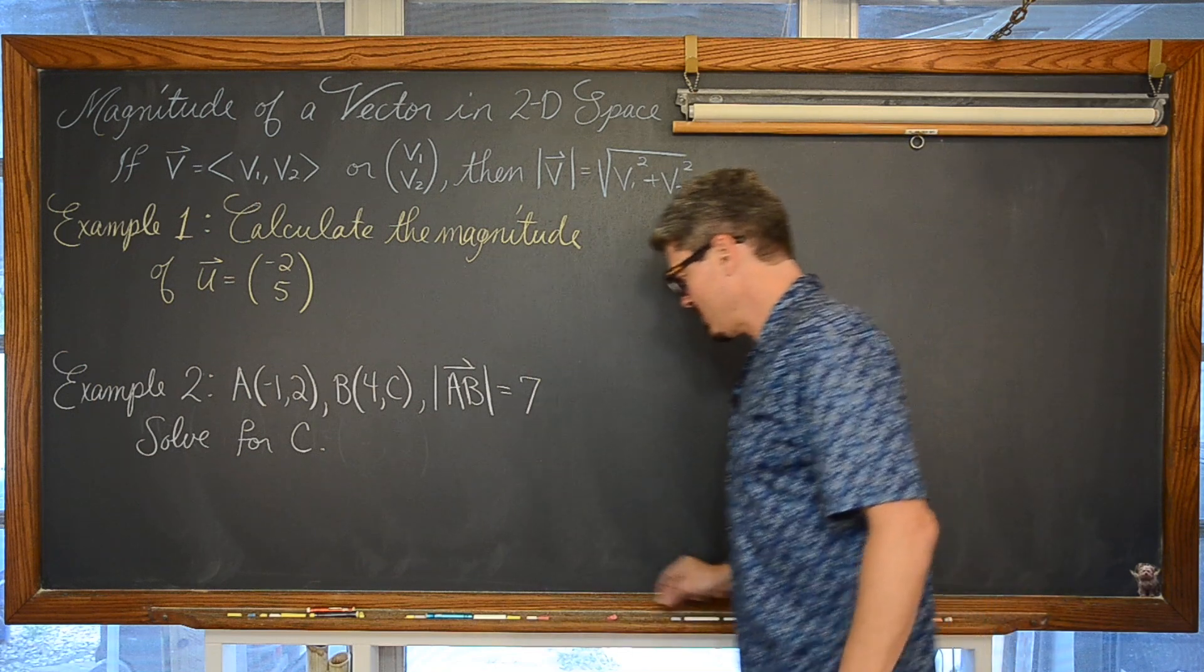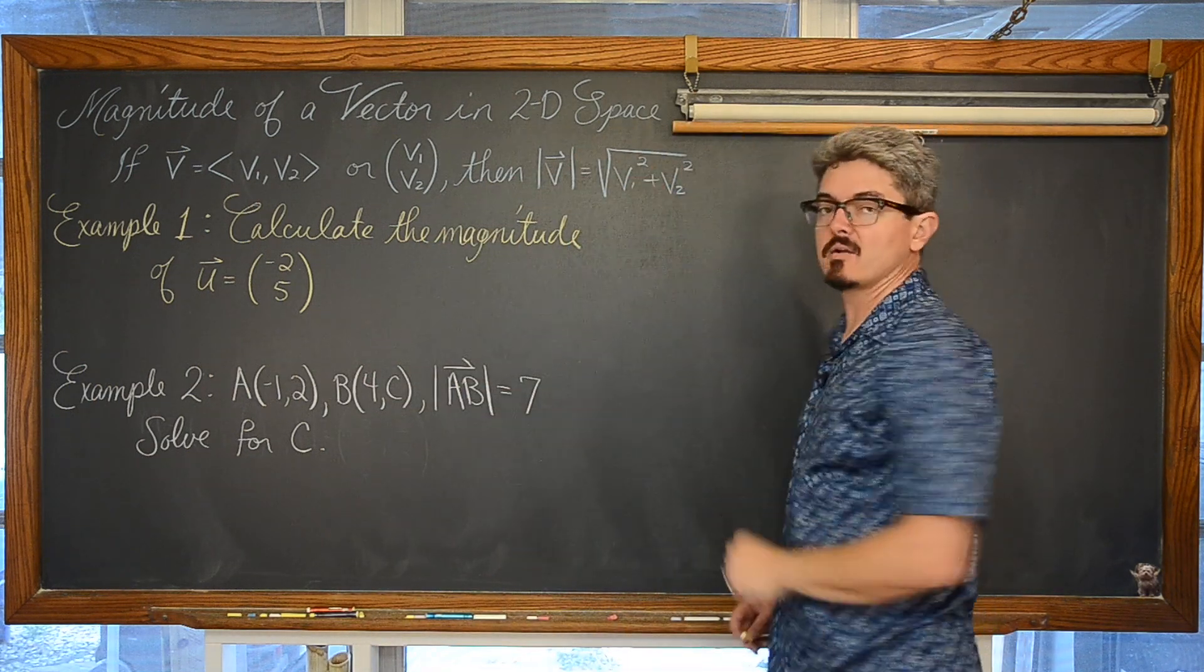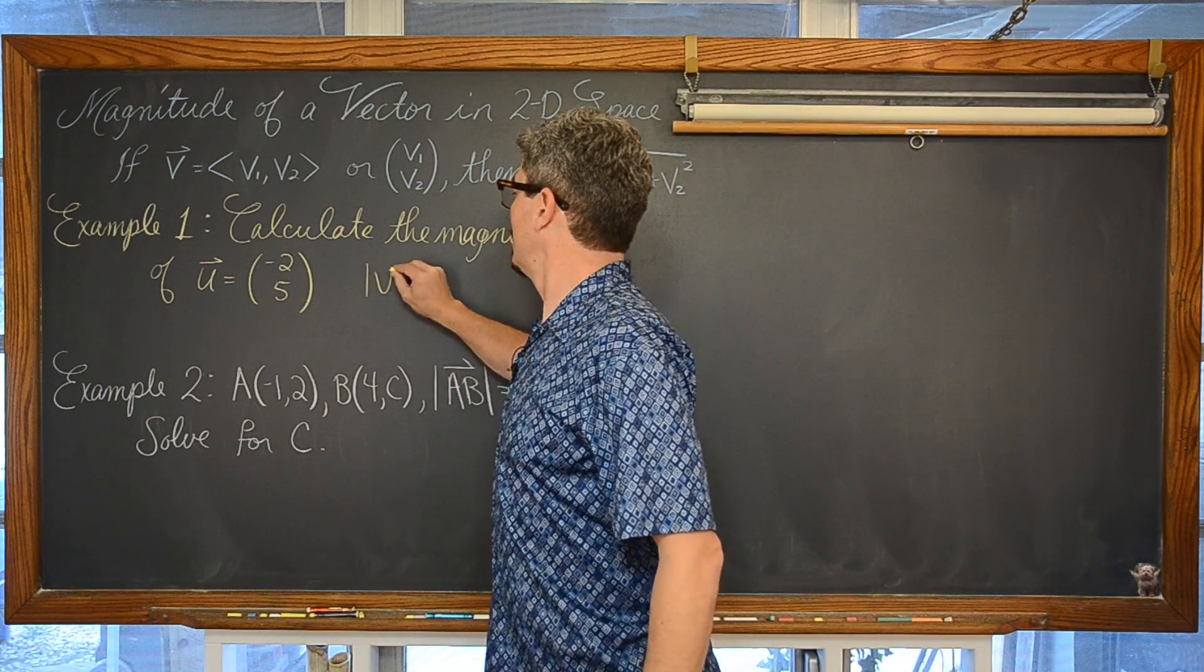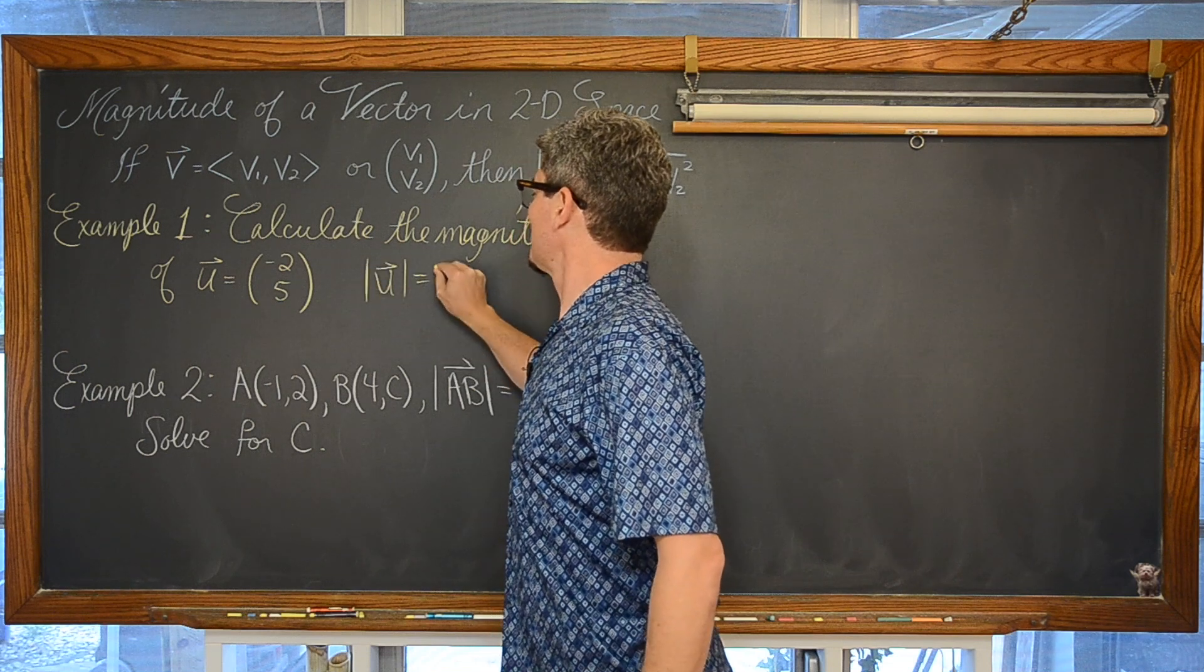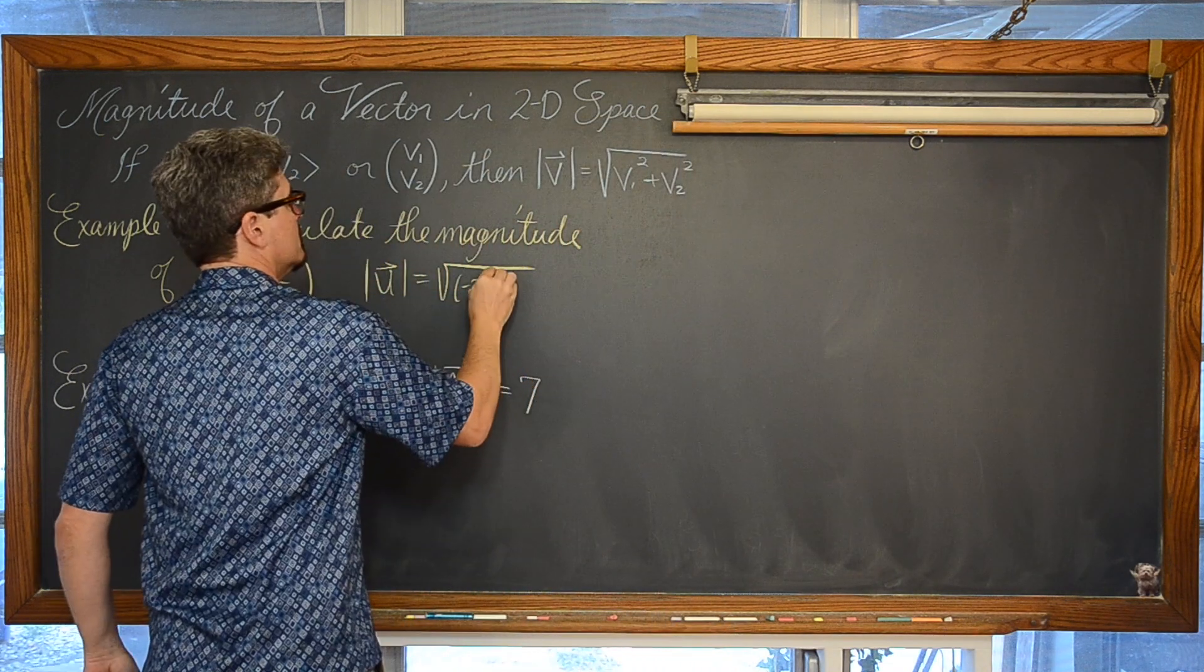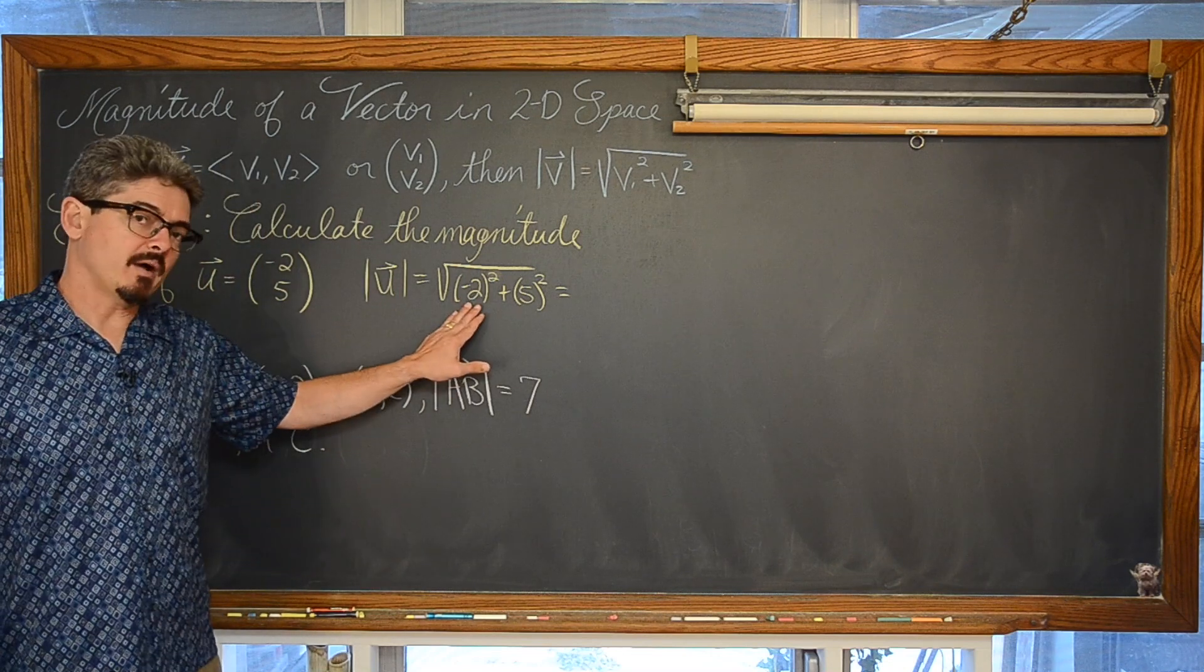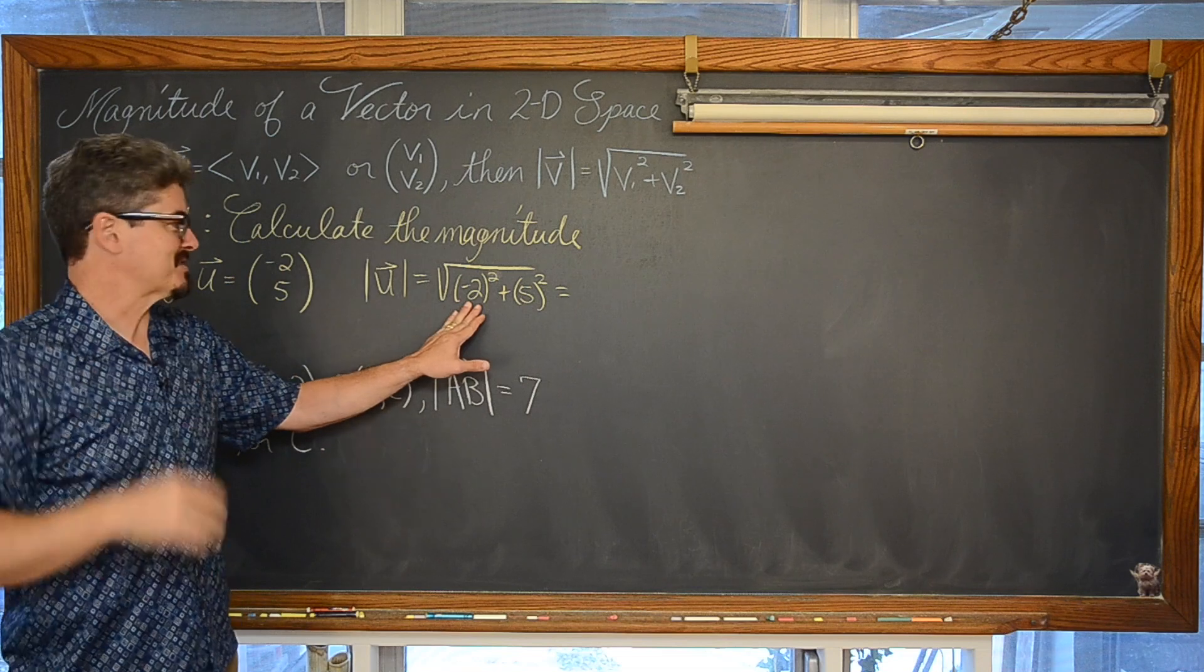This one is pretty straightforward. We are doing nothing more than something we have been doing since Algebra 1, just Pythagorean Theorem basically. So this magnitude of vector u is equal to the square root of negative 2 squared plus 5 squared. And I say this all the time, and by now we probably don't need to be reminded of this, but you should be doing all this by hand or in your head because these numbers are so small.